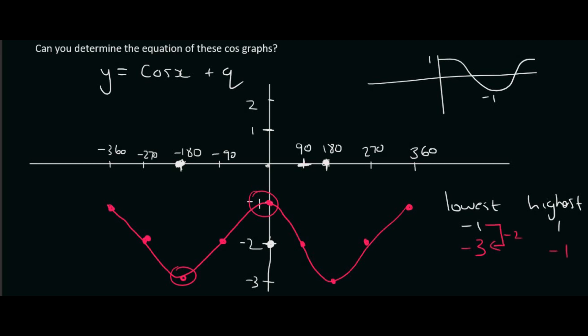How do you get from the normal one to the pink one? That's minus 2. And how do you get from there to there? That's also minus 2. So clearly, this pink graph has been moved 2 units down. So the equation is going to be cos x minus 2.